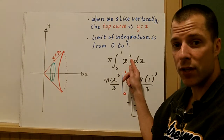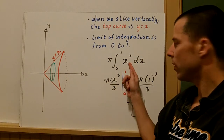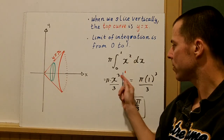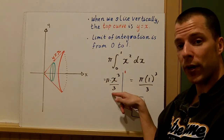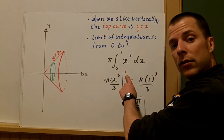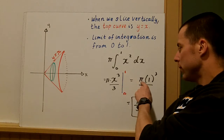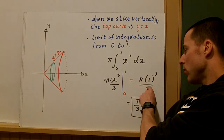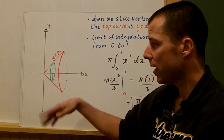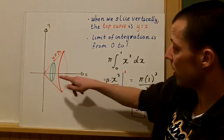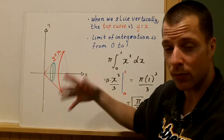We square the function per our definition. Integrating: pi times x cubed over 3, evaluated from 0 to 1. Since plugging in 0 makes the whole thing 0, we just plug in 1. Pi times 1 cubed over 3 is pi over 3. This makes sense because the radius and height are both 1.